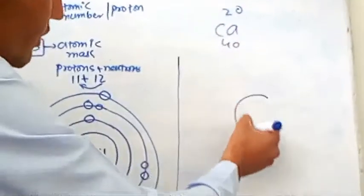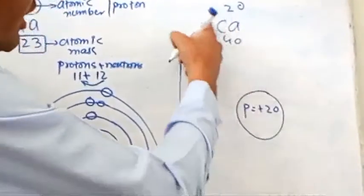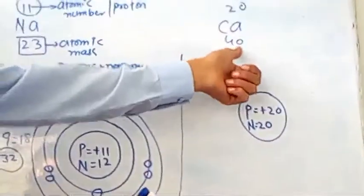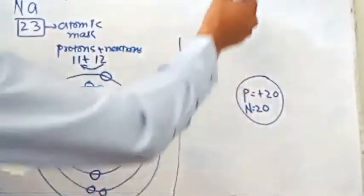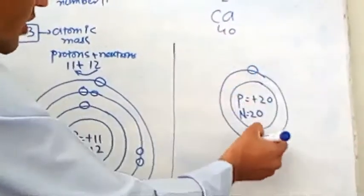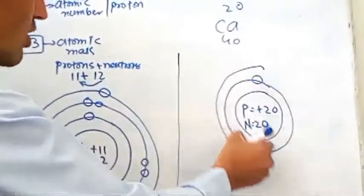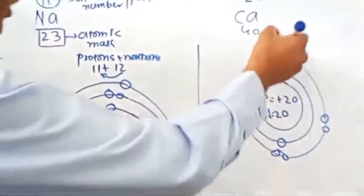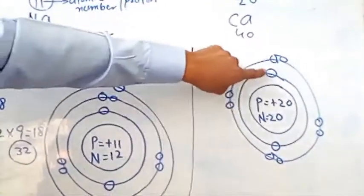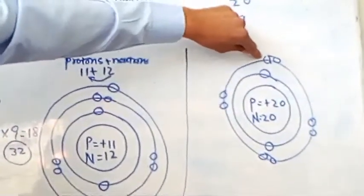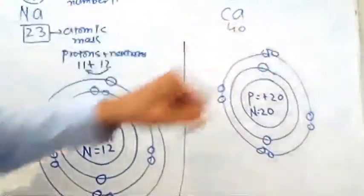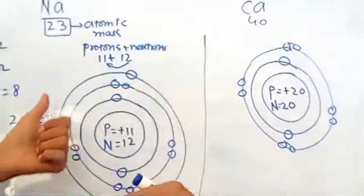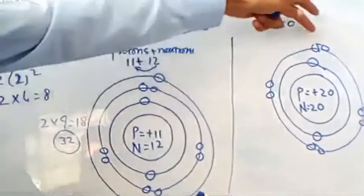Calcium's atomic number is 20, so calcium has 20 protons and 20 neutrons. Now we will distribute the electrons: the first shell contains 2 electrons, and the second shell contains 8 electrons. Now the third shell begins. The third shell can contain 18 electrons, but we have only 10 electrons remaining, since 2 plus 8 equals 10 electrons already distributed. We don't have 18 electrons left.